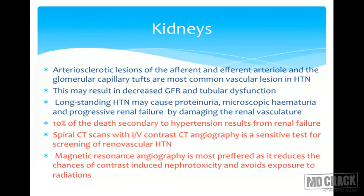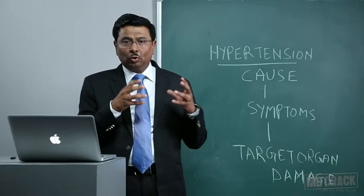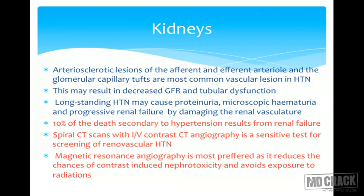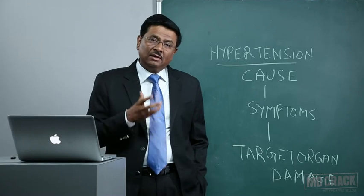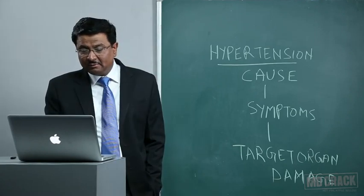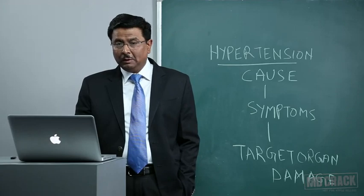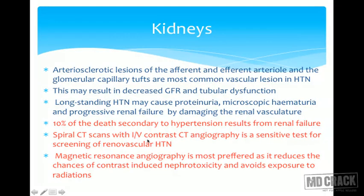Regarding kidneys, arteriosclerotic lesions of the afferent and efferent arterioles and the glomerular capillary tufts are the most common lesions seen in hypertension. This may result in decreased glomerular filtration rate and tubular dysfunction. Long-standing hypertension may cause proteinuria, microscopic hematuria, and progressive renal failure by damaging the renal vasculature. Importantly, 10% of deaths secondary to hypertension result from renal failure. Spiral CT scans with IV contrast (CT angiography) is a sensitive test for screening of renal vascular hypertension.